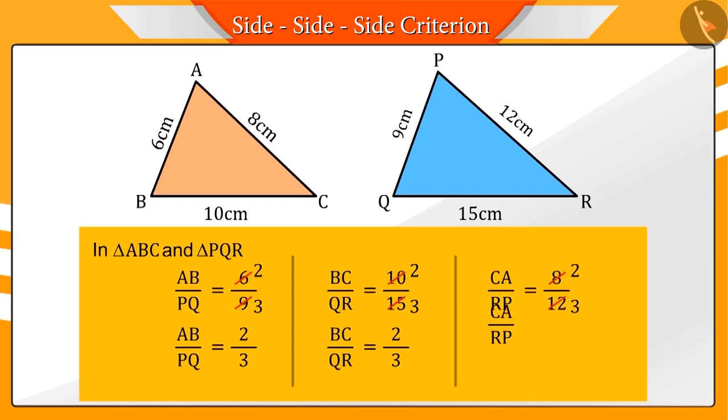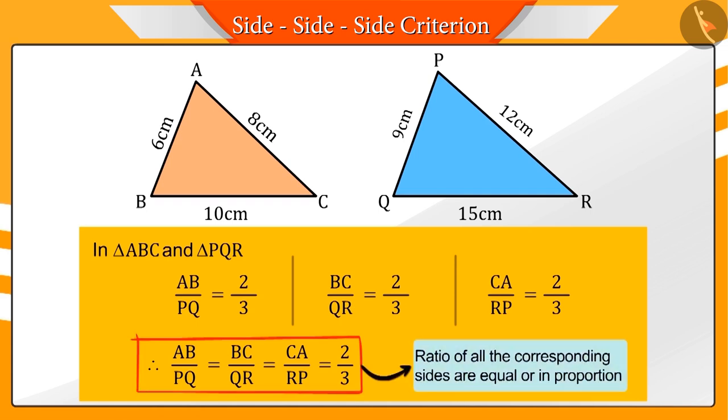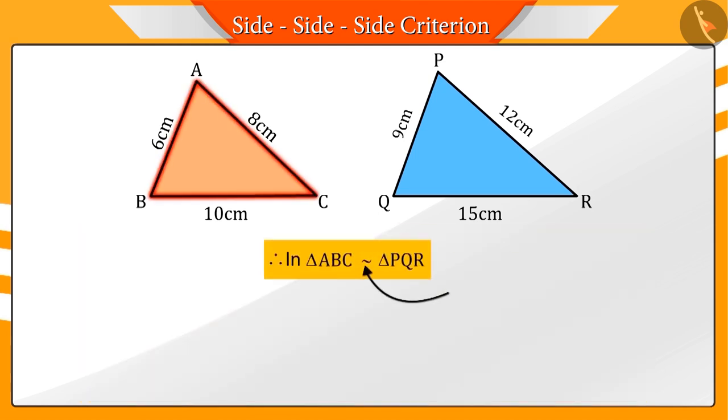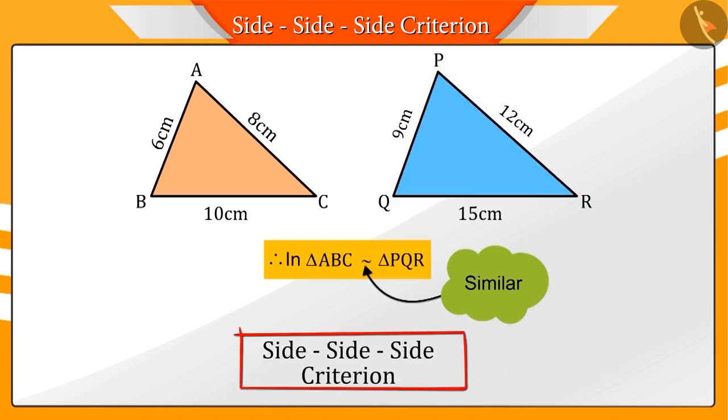Correct! Their ratio is equal to 2 by 3. Here, we saw that the ratio of the corresponding sides are equal. Hence, we can say that triangles ABC and PQR are similar by the SSS criteria.